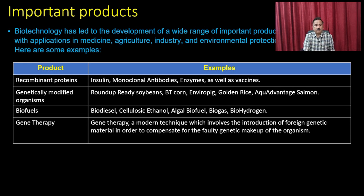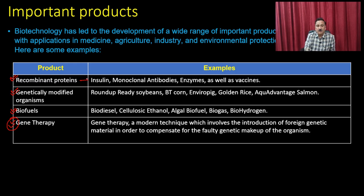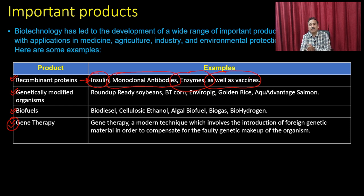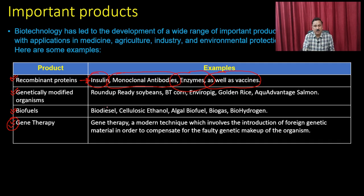With these kinds of advancements, biotechnology has helped us produce different types of products. We have produced recombinant proteins, genetically modified organisms, biofuels, and we are now utilizing recombinant DNA technology to develop gene therapy. Within recombinant proteins, we have developed insulin, monoclonal antibodies, different types of enzymes, and different types of vaccines — all making human life more comfortable and improving quality of life.